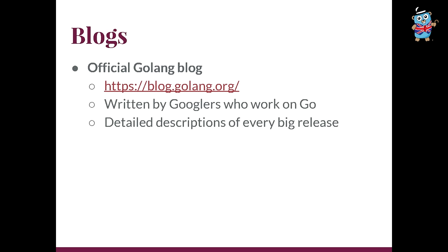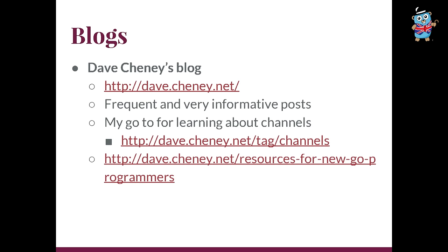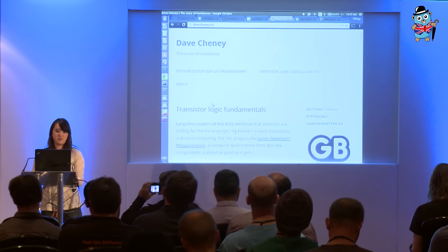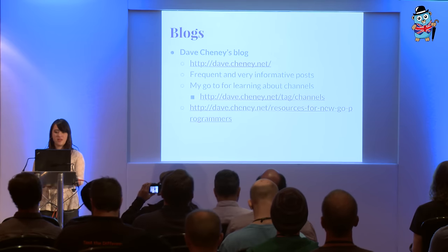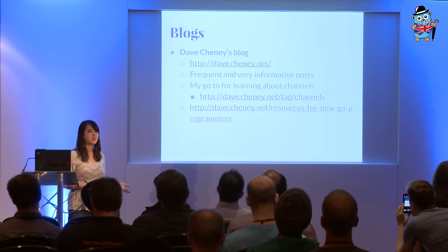Outside those different websites, there are also blogs — lots of people in the Go community are writing blogs. The first blog I came across is the GoLang official blog, written by people who work at Go. Basically every single major release they put updates as to what's changed and what's new, so you can say, hey, this is what's new in 1.7, which just came out. The blog I found most useful was Dave Cheney's blog. I came across this one when I was trying to figure out a bunch of things for channels. He updates it super often — there are lots of great concepts on there. He also has resources for new Go programmers, which is super useful.